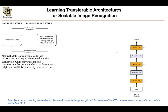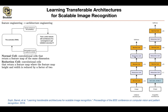The task of the RNN is to come up with the structure of the normal cell and the reduction cell. Once the algorithm produces good cells, we take those cells and place them into a bigger architecture for ImageNet — it's deeper and has additional operations, including more reduction cells and more normal cells. So whatever comes out of the architecture search, we enlarge it and train it once on ImageNet and report the results.